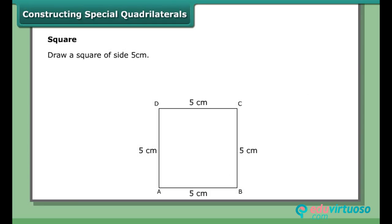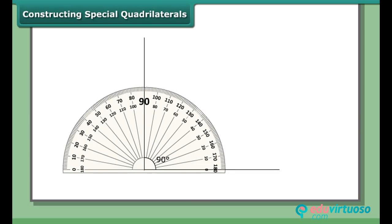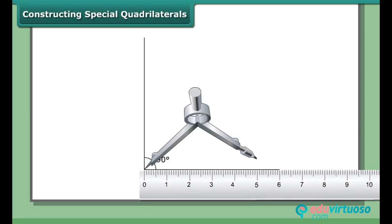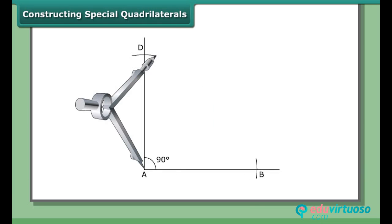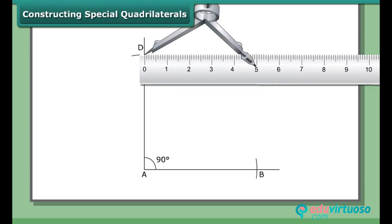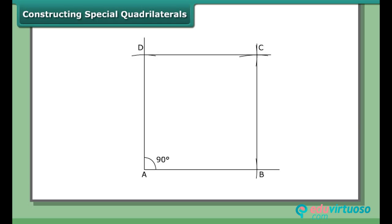Constructing a special quadrilateral: the square. Draw a square of side 5 cm. All angles are right angles and all sides are equal. Draw a right angle at point A using a protractor or compass and ruler. Set the compass to 5 cm and cut off sides AB and AD along the arms of the right angle. With B as center and the same radius, draw an arc. With D as center and the same radius, draw an arc to intersect the first arc at C. Join C to B and D. ABCD is the required square.